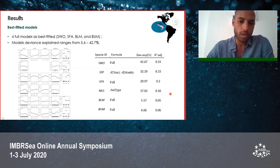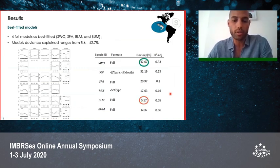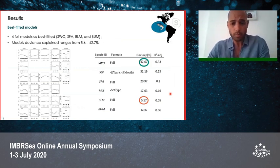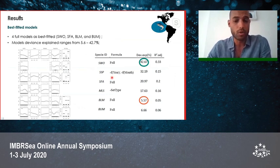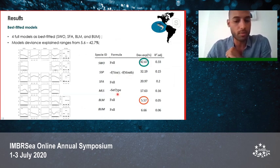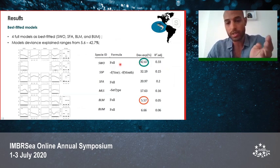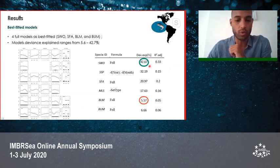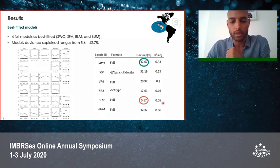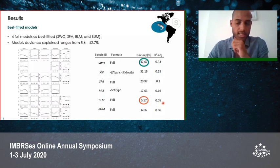From the model results, four of the six species retained all variables in the best-fitted full models. For the short-bill spearfish, the best model was reduced by removing year and month variables; for the striped marlin, the set type variable was removed. Among all species, the highest deviance explained was for the swordfish at 42.67%, and the lowest was for the black marlin at 5.57%.